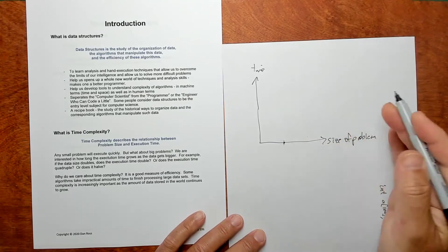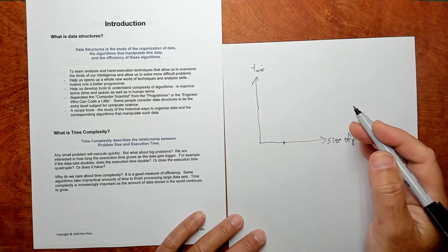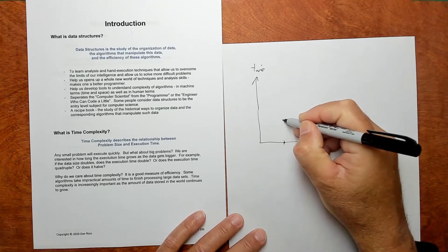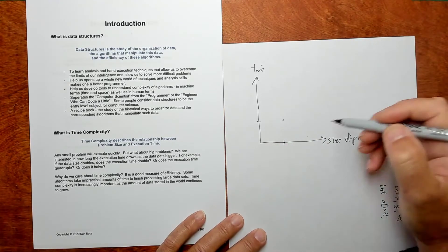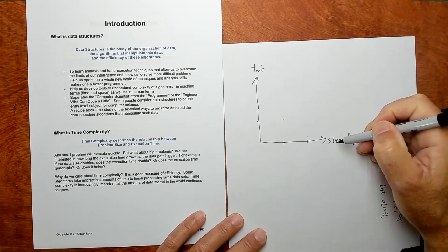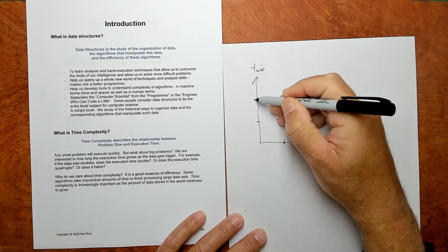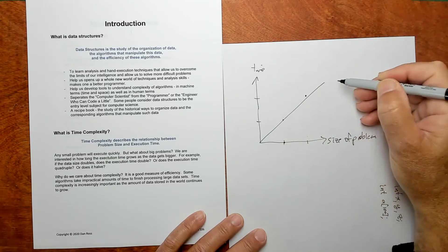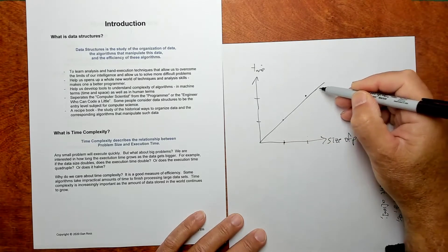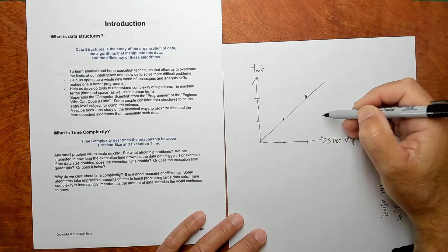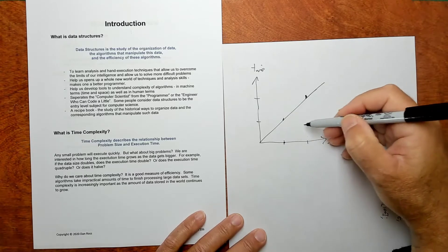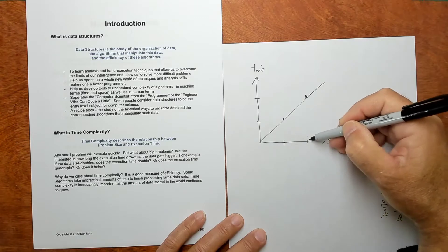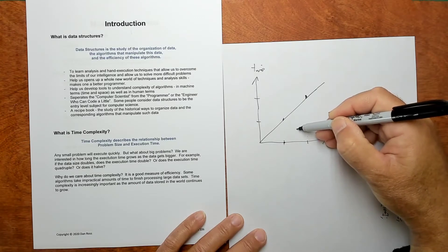So let's say the size of the problem, it could be ten data elements, something like that. And let's say it takes a certain amount of time. Now, what if you double the size of that? Does it double the time? It might. It might double the time in which we'd say that that was proportional or linear, sometimes we say, straight line.